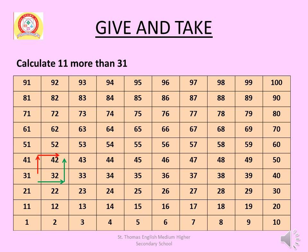Second way: start from 31, move 1 step right to 32, then jump up 1 row to 42. That means 31 plus 11 equals 42.